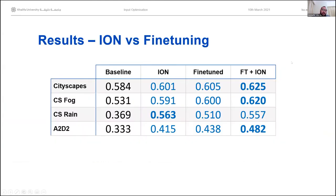To quantify performance, we use intersection over union — the average IoU of each class in the segmentation output against the ground truth. The first column is the baseline: our DeepLab segmentation model trained only on Cityscapes, which has never seen fog, rain, or Audi images — that's why its performance on those datasets is lower. The second column shows results of the same network but with images pre-processed by our trained ION. The third column uses a version of the segmentation network that has undergone additional training on all four datasets.